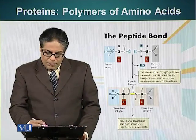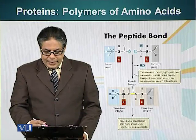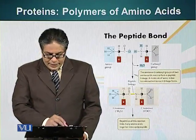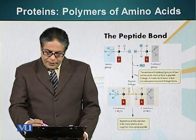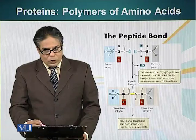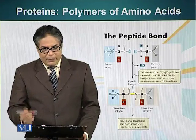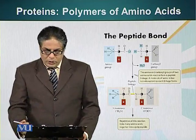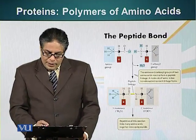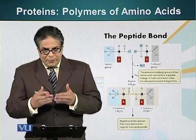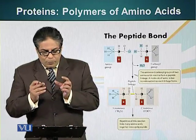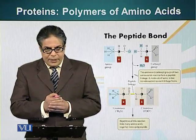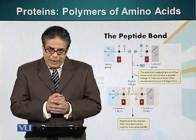The carboxyl group of one amino acid forms a bond — the carbon present in the carboxyl group forms a bond with the nitrogen atom of an adjacent amino acid. When this bond forms, a water molecule is lost. So the carbon-nitrogen bond is basically the bond holding two monomers of a protein together. This bond is called the peptide bond.